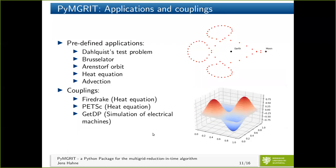Let's look at some numerical examples. We have these predefined applications and couplings. As a relatively new package, we are looking to implement more applications and couplings — if you're interested, just let me know. We have some ODEs and PDEs, and couplings with Firedrake and PETSc for the heat equation, and with GETDP, which is a non-linear tool for the simulation of electrical machines.